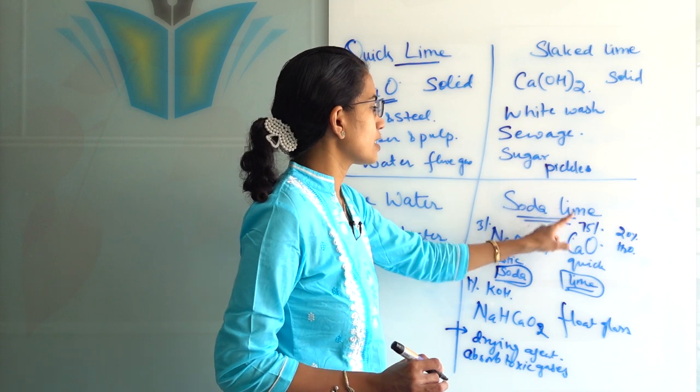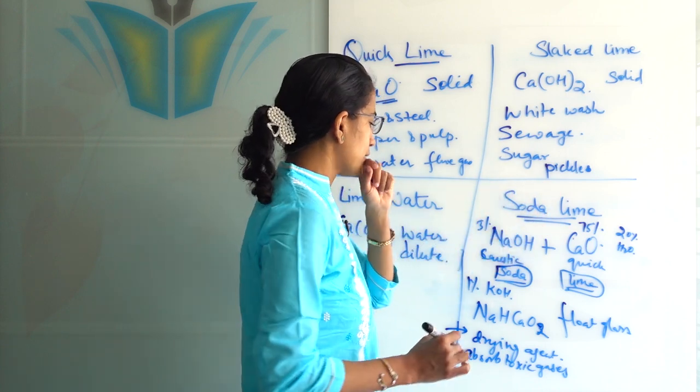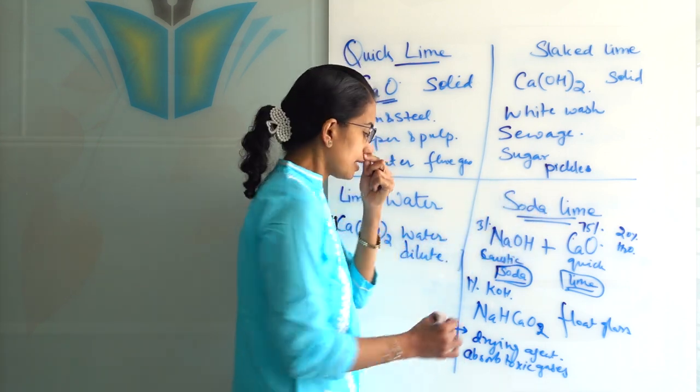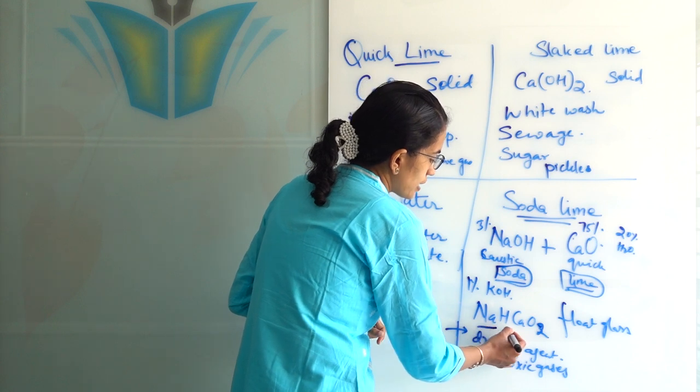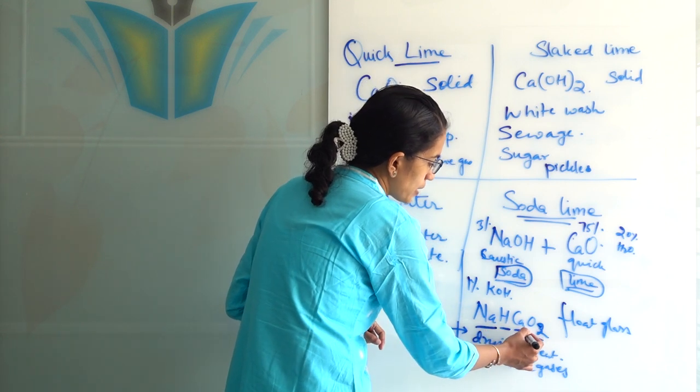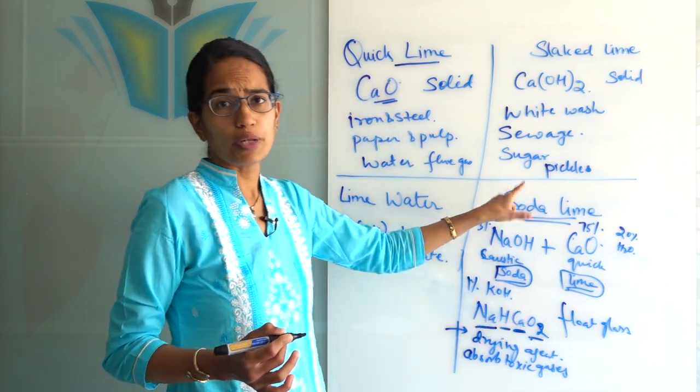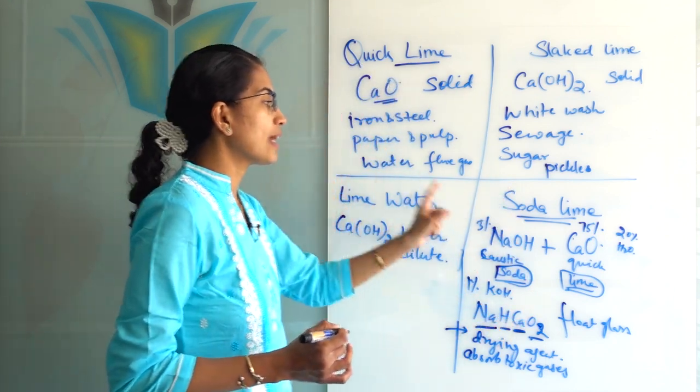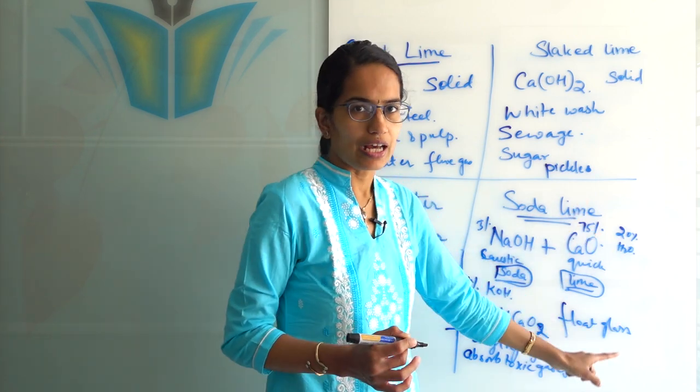The next important thing about soda lime is the chemical formula for it which is NaOH·CaO2. So you have sodium as well as calcium in the chemical formula for soda lime. Soda lime is also called as float glass.